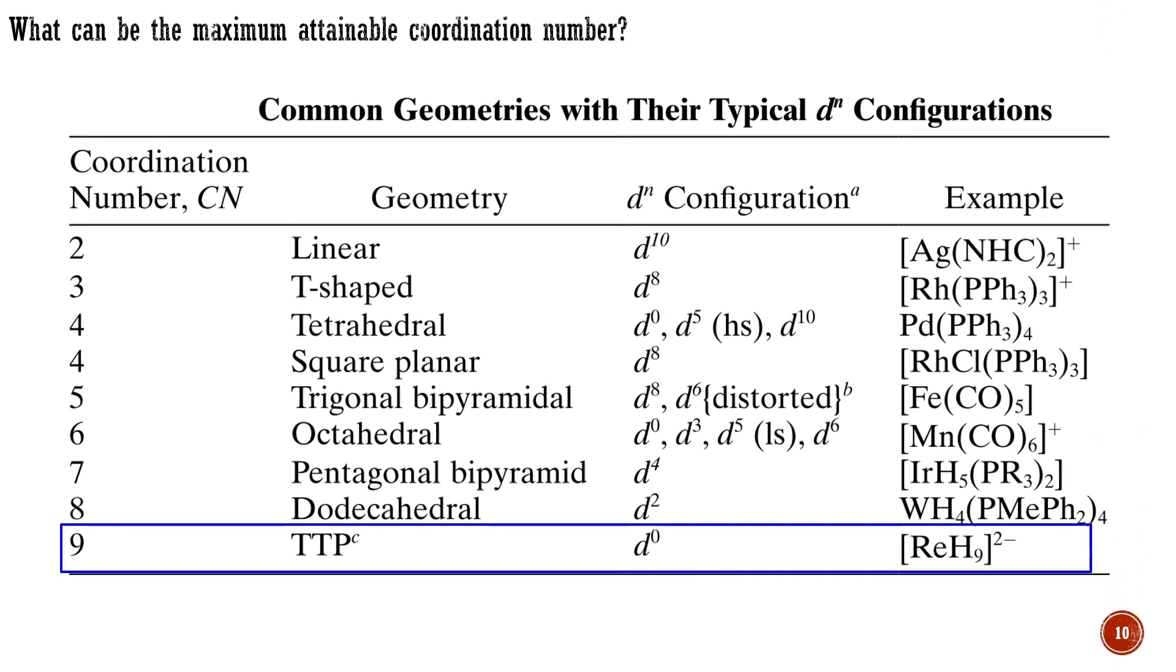To reach the maximum coordination number of 9, we need relatively compact ligands. The maximum attainable coordination number is also affected by the d-configuration. A coordination number of 9 requires that the ligands have all 9 empty s, p, and d orbitals to occupy, so d0 configuration is needed. A good example of a 9-coordinated complex is potassium nonahydridorhenate. Eight coordination requires d2 configuration or lower and similar arguments applied to the other coordination numbers.